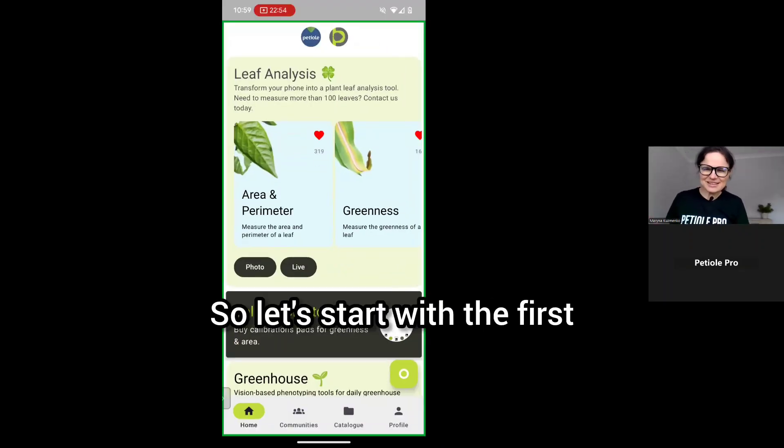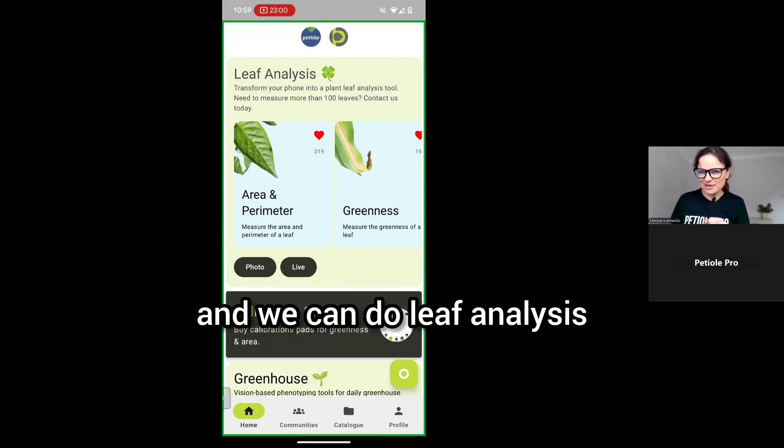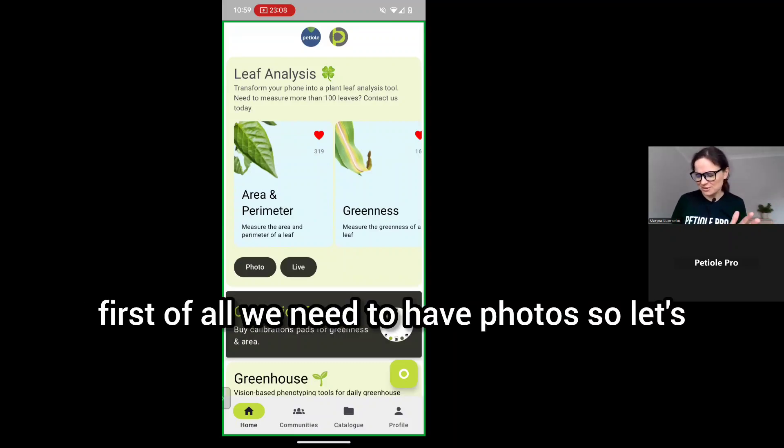Let's start with the first module, with the first mini app. We can do leaf analysis. Specifically today we will focus on leaf area.